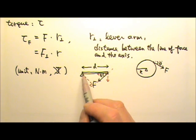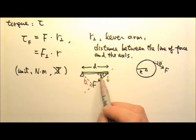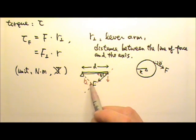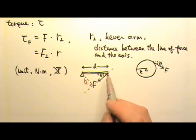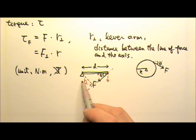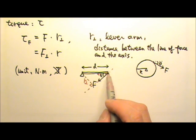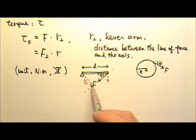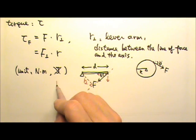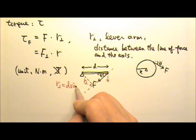So the lever arm is opposite to the angle. For this right triangle, and the D is the hypotenuse, so if we want to find the opposite side, we just multiply the hypotenuse D by sine theta. So the lever arm is D sine theta.